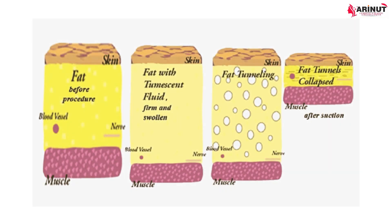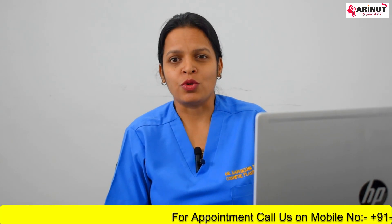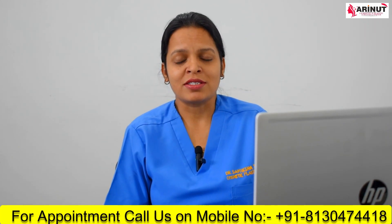The first one is tumescent liposuction. In tumescent liposuction, your surgeon uses a saline or salt solution-based fluid which is injected into the fat pocket, and then the liposuction procedure is performed. When this tumescent fluid is injected, it contains certain medicines that will shrink your blood vessels and control any possible bleeding, as well as medicines that will take care of your pain in the post-operative period.